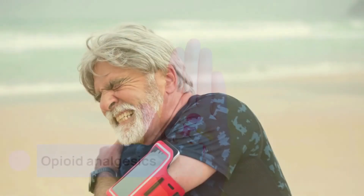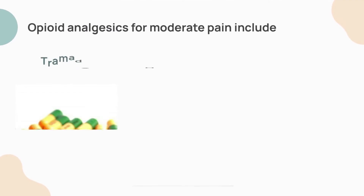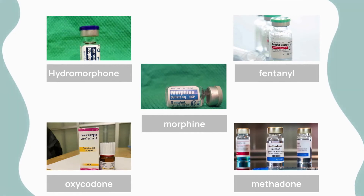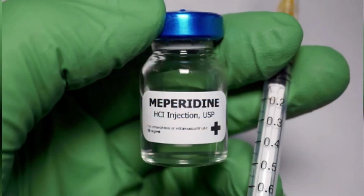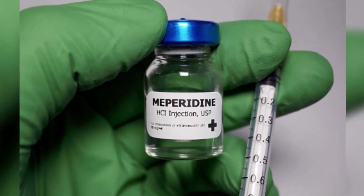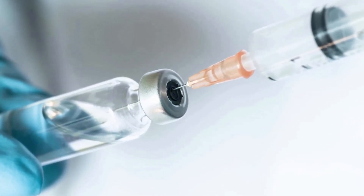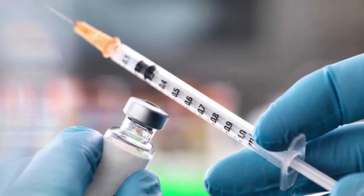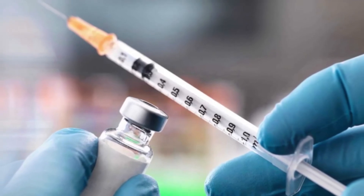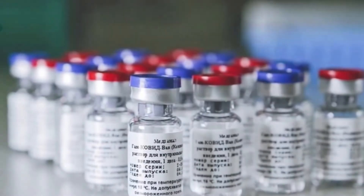Opioid analgesics are appropriate for treating moderate to severe pain. For moderate pain, opioids include tramadol, hydrocodone, and codeine. Hydromorphone, fentanyl, morphine, oxycodone, and methadone are effective for more severe pain. Morphine is the most commonly used opioid and other opioid effects are compared to it. Meperidine is no longer recommended except in rare conditions at low doses. Check opioid formulations carefully to determine whether short-acting or modified-release extended-release dosing is indicated. For many opioids the dose can be titrated upward progressively, though this increases risk for adverse effects. Opioids are available in transdermal, transmucosal, and buccal routes.